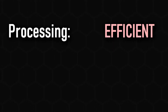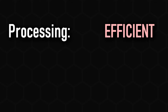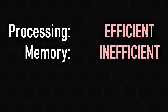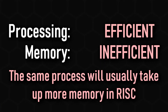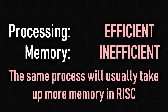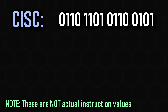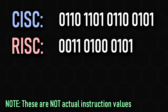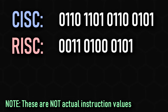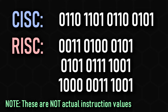However, while RISC benefits in processing efficiency, it lacks in RAM space efficiency. Often it takes more instructions to do the same thing in RISC than it does in CISC, and while a CISC instruction may take up slightly more room than a RISC instruction, it can do more overall, meaning fewer CISC instructions need to be used.